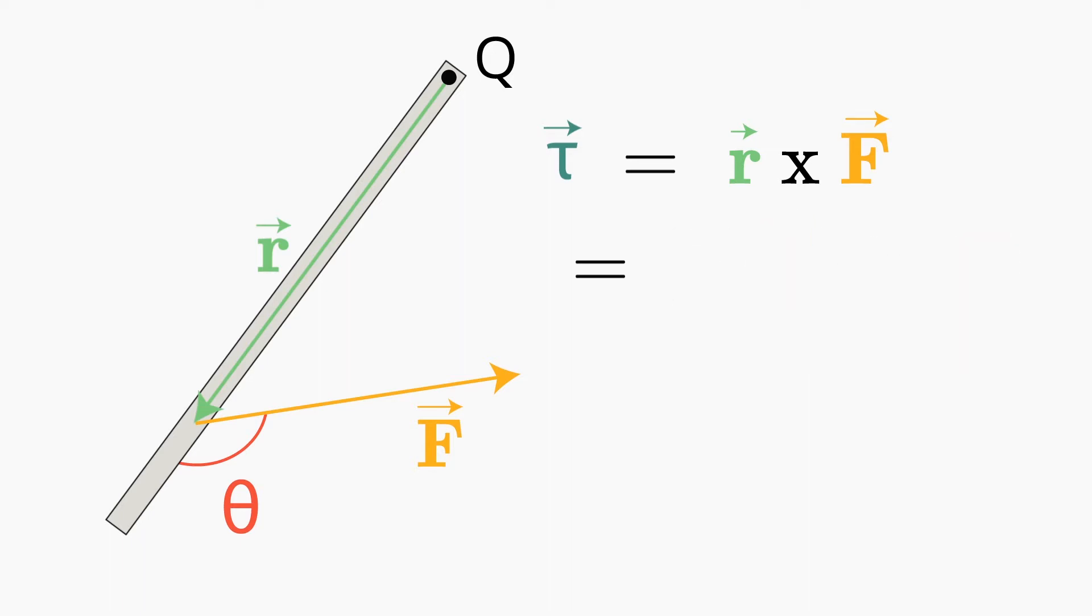First, we can think about this as the magnitude of F times the quantity R sine theta. If we look at the direction of the force, then it is easy to see that R sine theta is just the part of R that is perpendicular to the force.